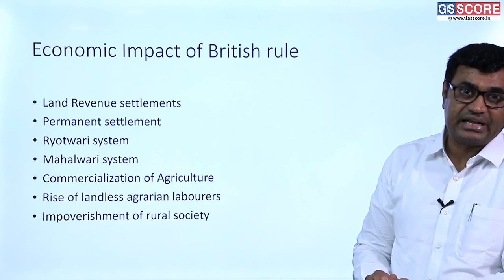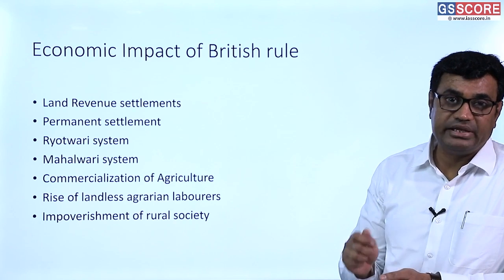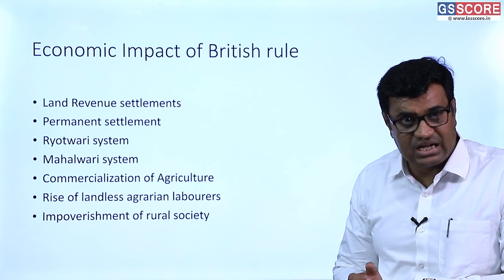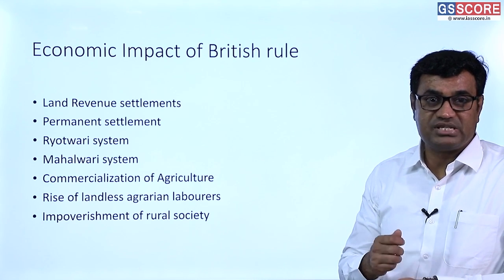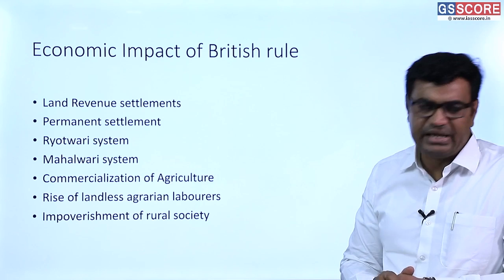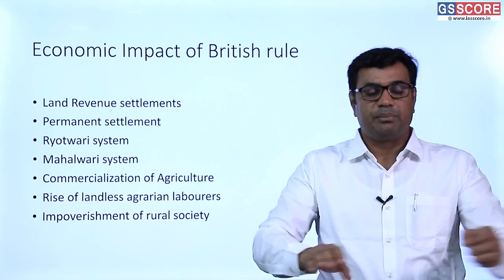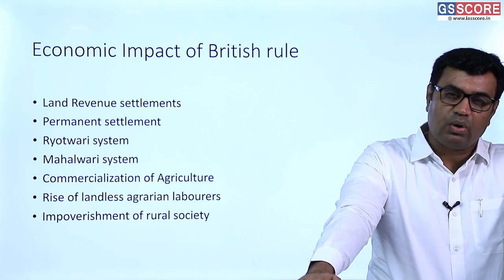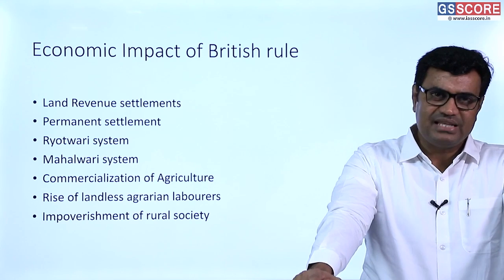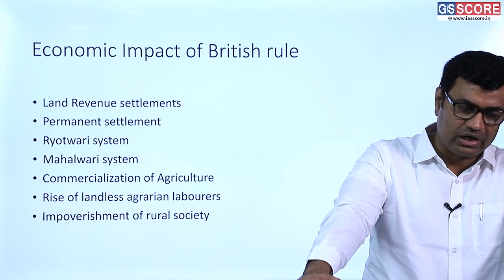Land revenue fixed on a permanent basis was not feasible in India because Indian agriculture depends on variable climatic conditions like rainfall. After the Permanent Settlement failed, the Ryotwari Settlement was introduced in Madras and Bombay in 1820, whereby revenue was collected directly from the peasants rather than through zamindars. The Mahalwari Settlement was introduced in Punjab and the northern plains, where land revenue was collected by a local agent amounting to one-third of the total produce — more liberal than the other two settlements.